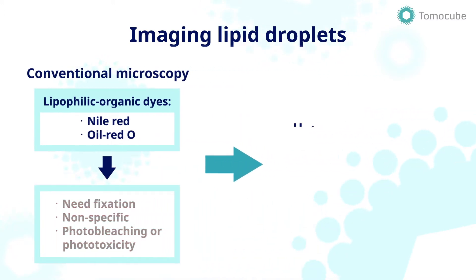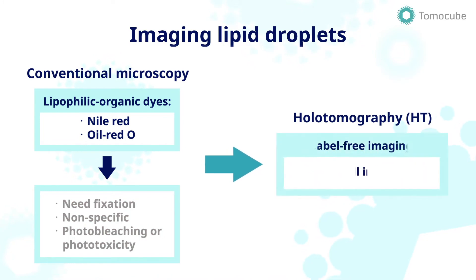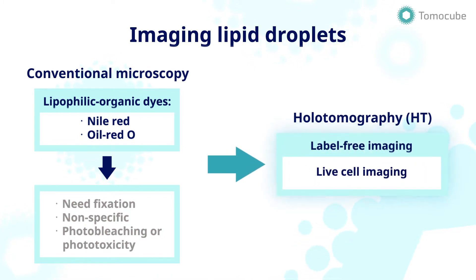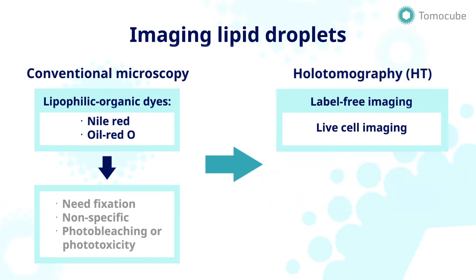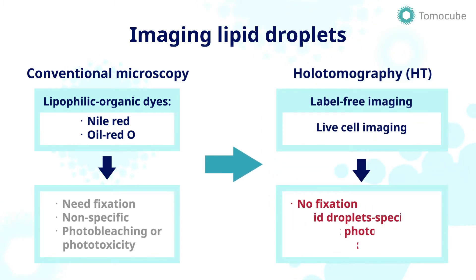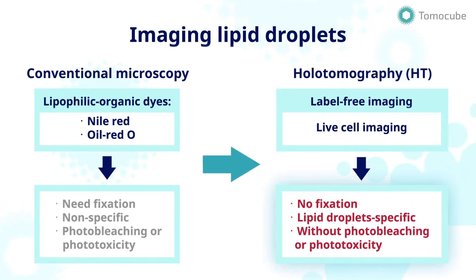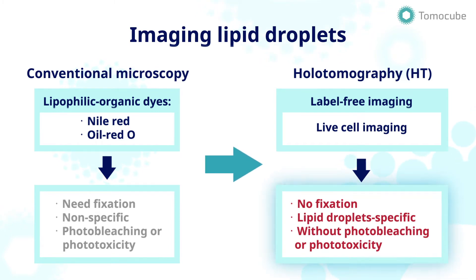With holotomography, these problems can be solved because lipid droplets in live cells can be observed without the use of exogenous labels or reagents. Because HT uses the sample's refractive index only, the process is free from fixation or phototoxicity problems and allows lipid droplet imaging with high specificity.